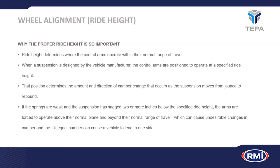If ride height is incorrect your directional stability and drivability will be influenced. If springs are weak and the suspension has sagged two or more centimeters below the specified ride height, the arms are forced to travel above their normal plane and beyond their normal range of travel, which is totally undesirable. Unequal camber and toe can result, causing the vehicle to pull to one side.